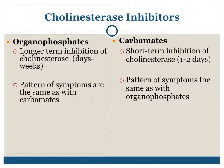There are two types of cholinesterase inhibitors: organophosphates and carbamates. Organophosphates cause inhibition of cholinesterase that lasts for days or weeks. Carbamates cause inhibition that lasts only one or two days.